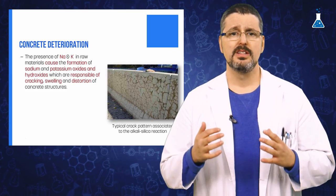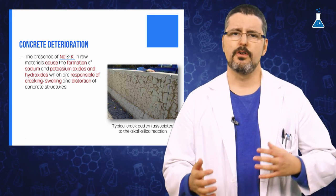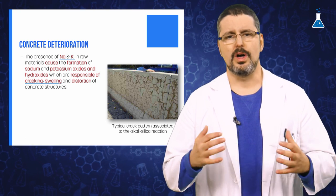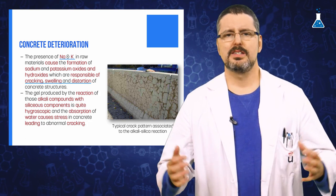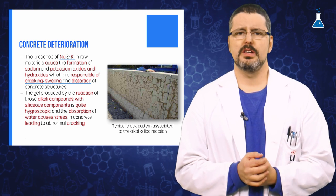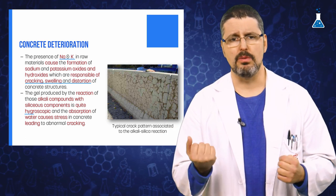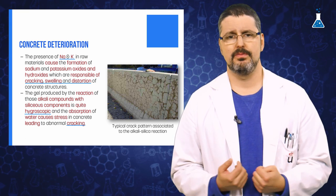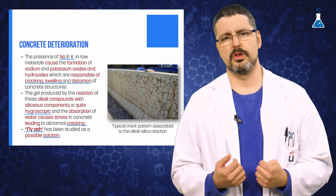It is important to mention that the presence of sodium or potassium sulfates in raw materials can cause the formation of sodium and potassium hydroxides, which are responsible for cracking, swelling, and distortion of concrete structures. The problem is related to an alkali-silica gel formed by the reaction of these hydroxides with silica or siliceous components in the aggregate. The gel is highly hygroscopic and absorbs water, producing stress in the concrete and leading to abnormal cracking. The addition of fly ash generated by coal combustion has been studied as a solution to reduce this problem.